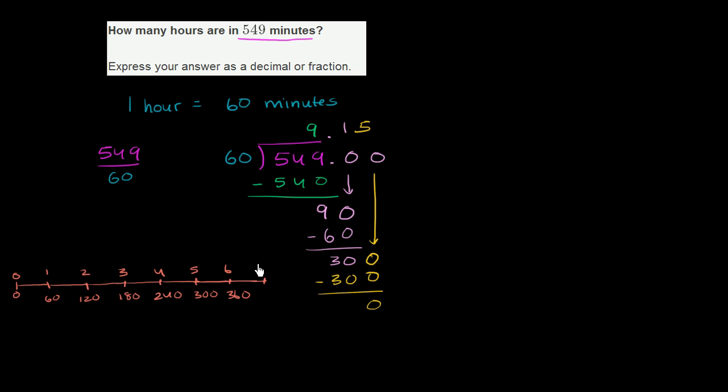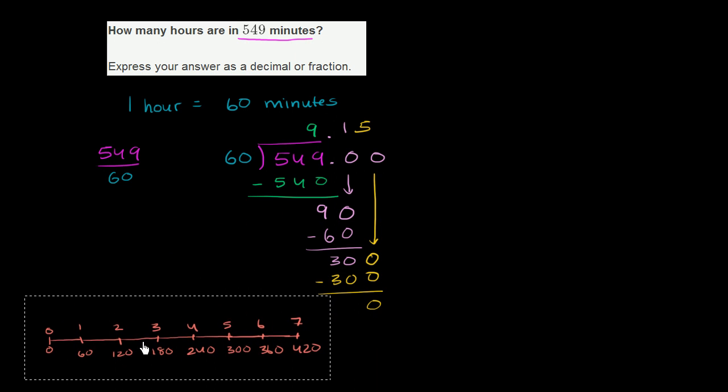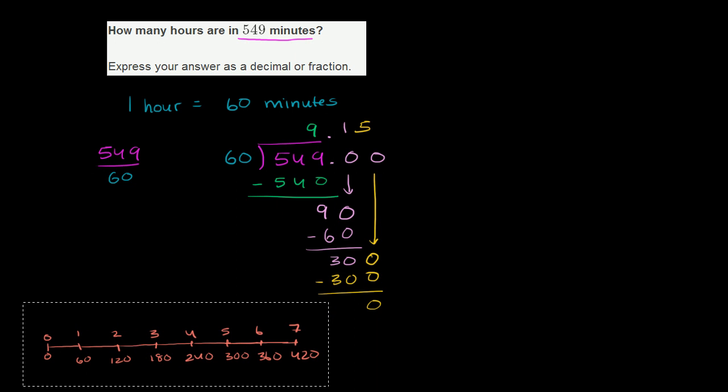7 hours, I might be running out of space, is 420 minutes. Let me copy and paste this someplace where I have more real estate. So let me clear that. And then let me paste that someplace where I don't run into my other math that I did. All right, so then you have 8 hours is 480 minutes.